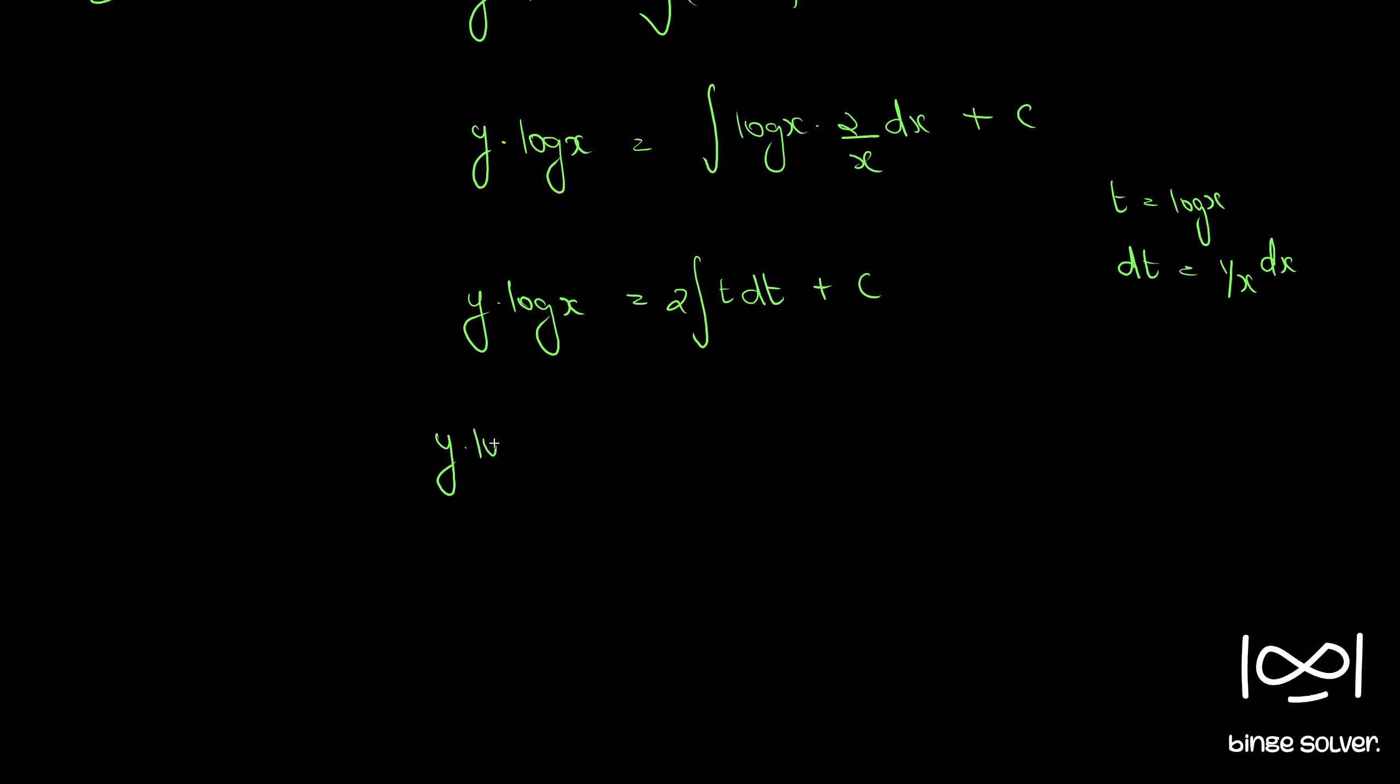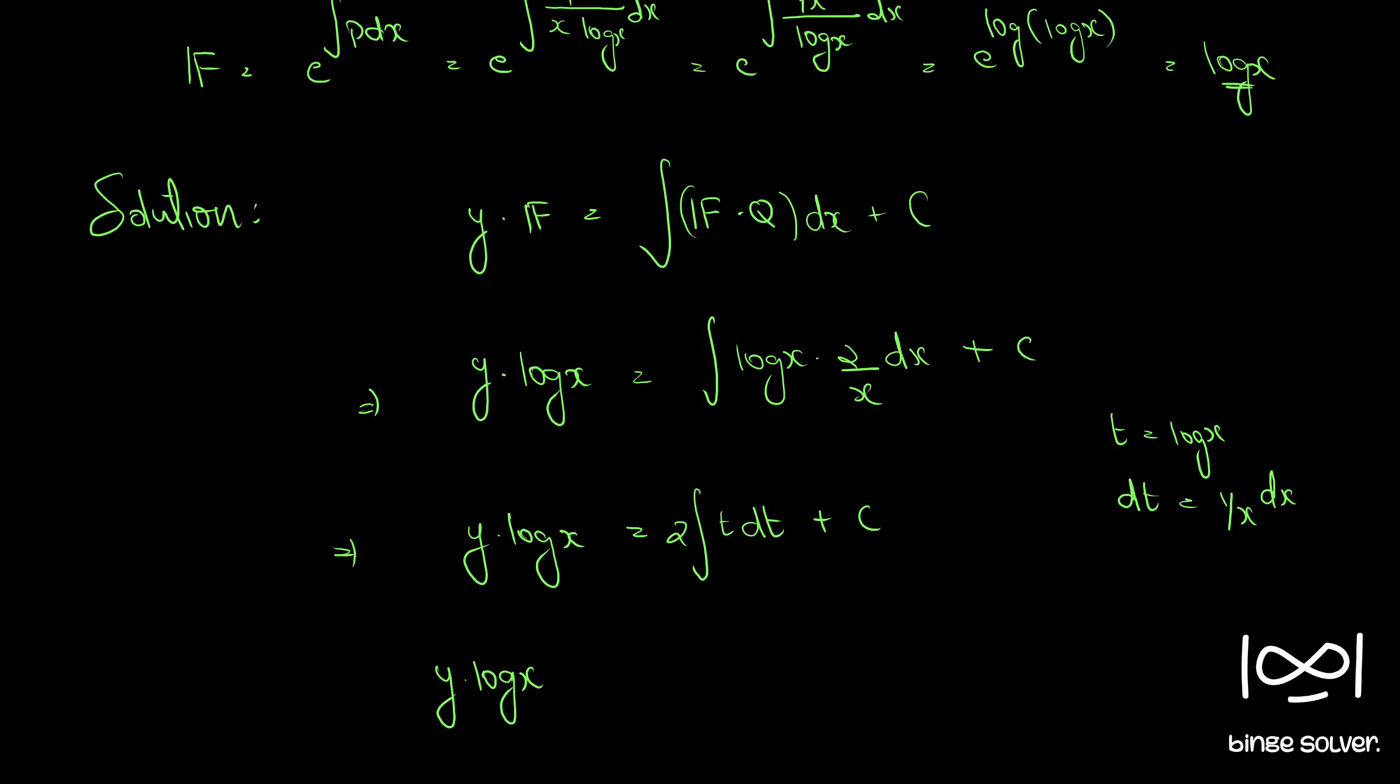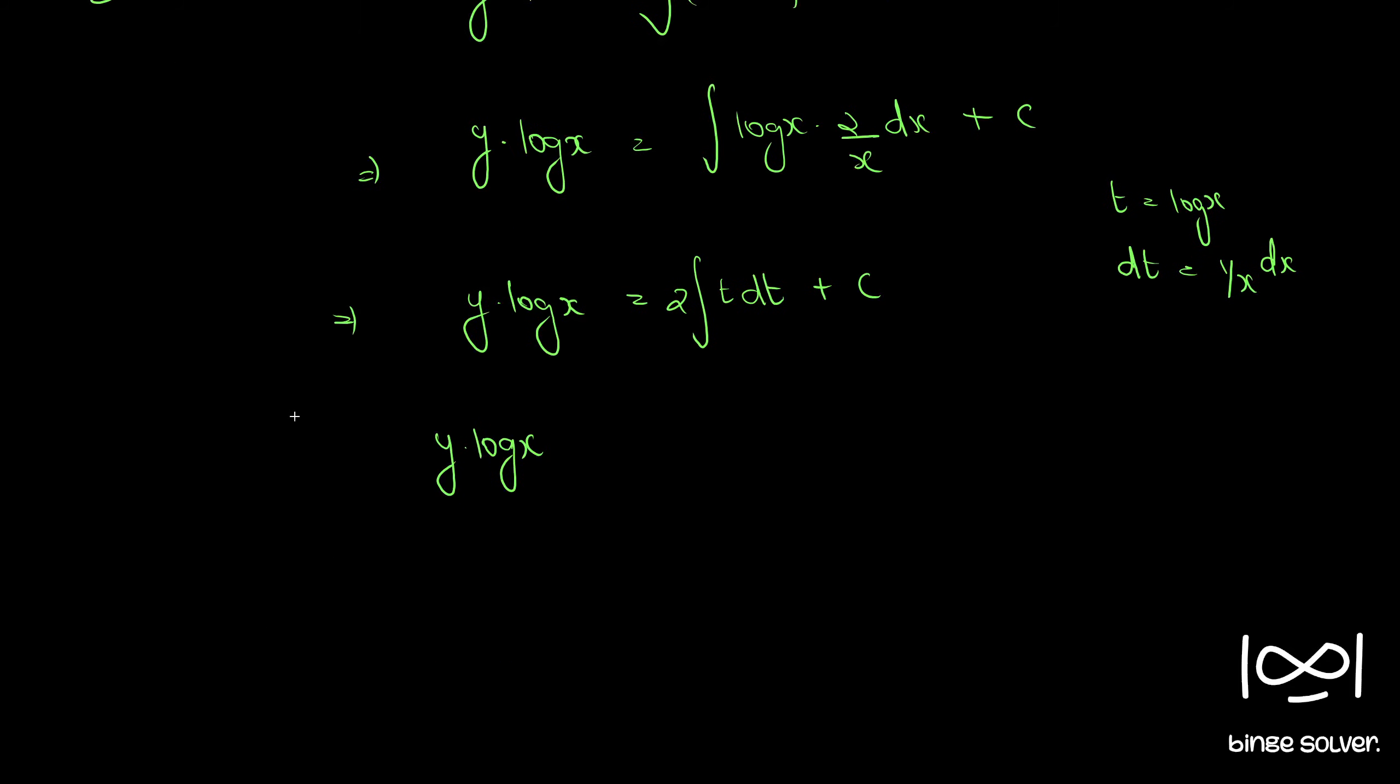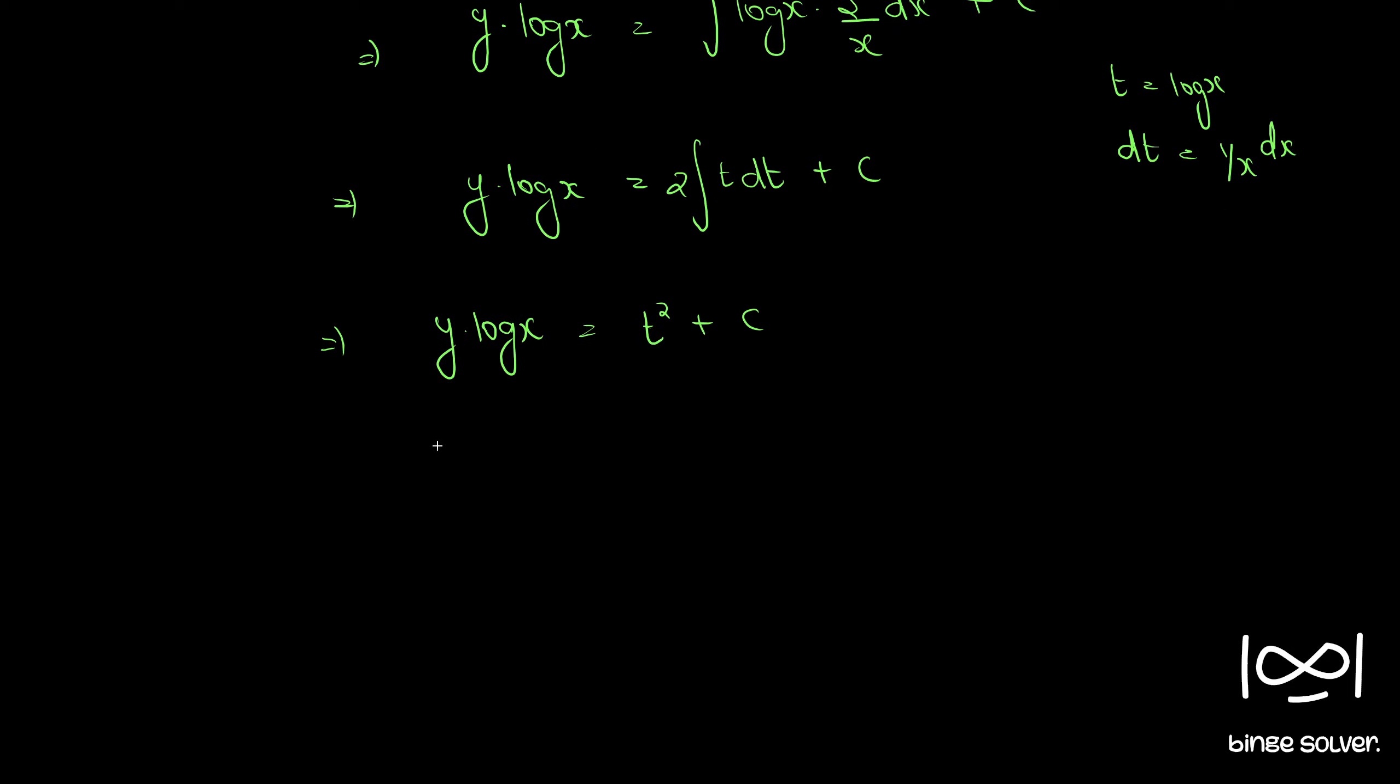So y into log x is equal to 2 into integral of t is t square by 2. So 2 cancels, t square. So t square plus c. We can substitute for t square, which is y into log x is equal to log x the whole square plus c.